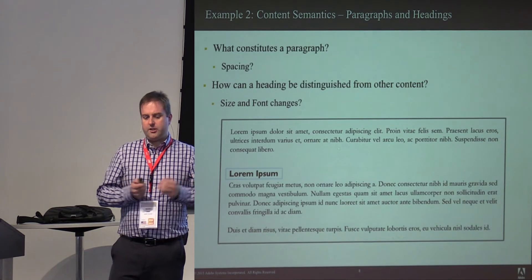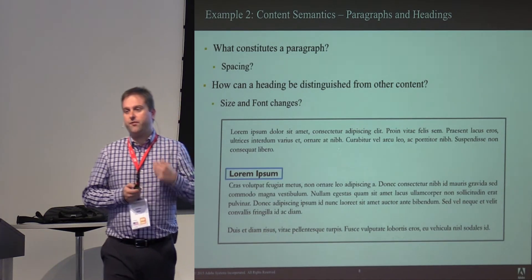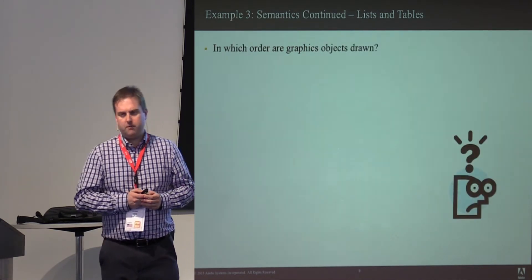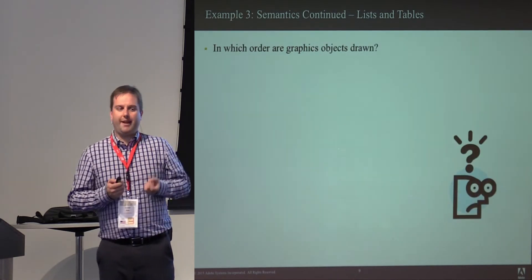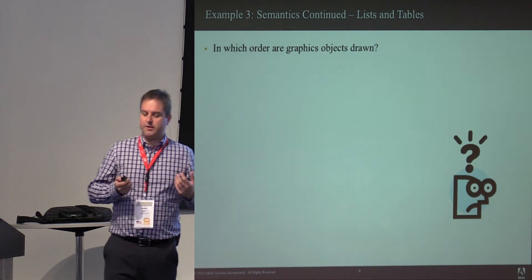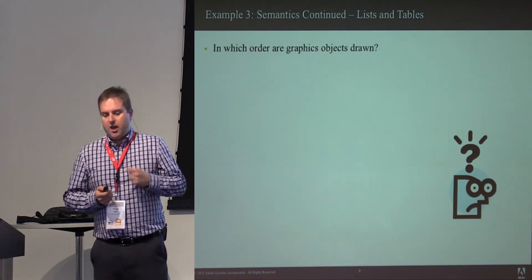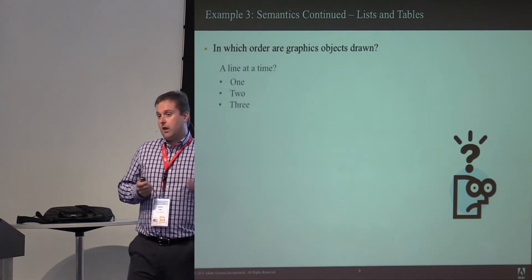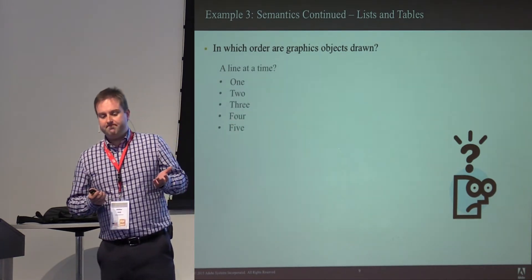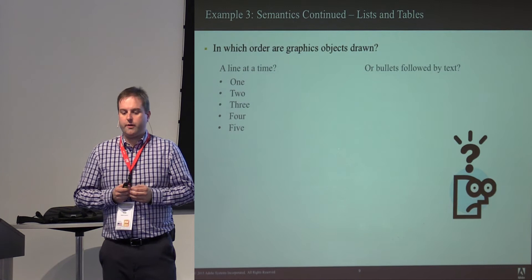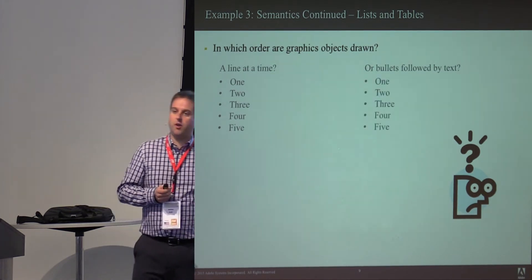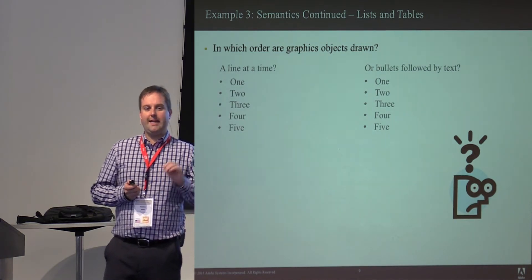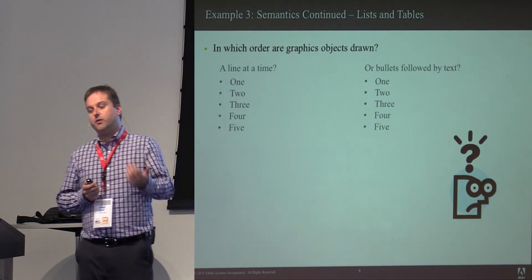How do you tell the difference between headings? Do you know that a certain font size is a heading? You can use different fonts and size changes to convey headings, but that's just visual inference. When you think of more complex structures like tables and lists, in what order are the graphics actually drawn? You can draw a list line at a time, or bullets first followed by text. Both produce the exact same visual appearance, but make it easier or harder to represent that content to a user.